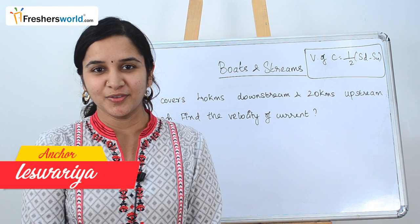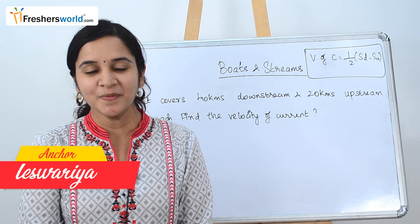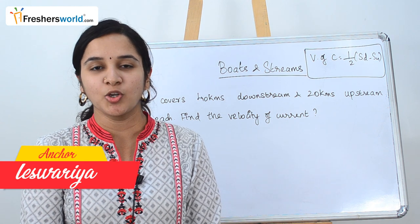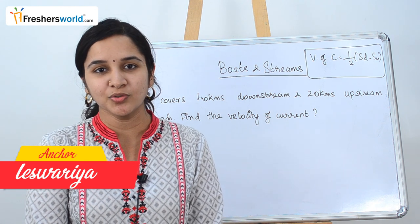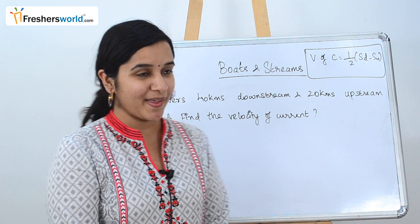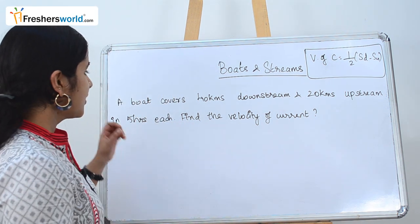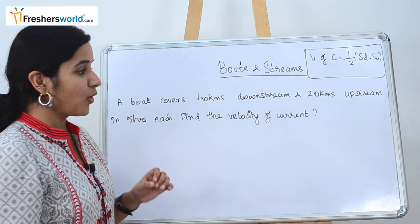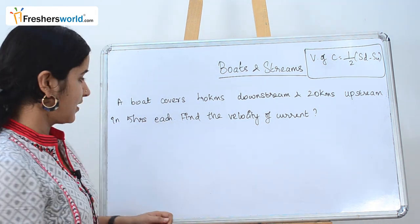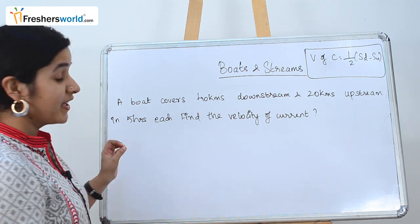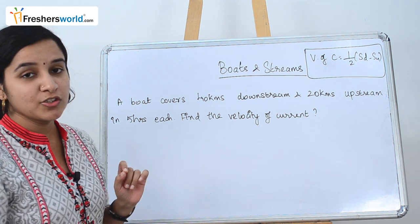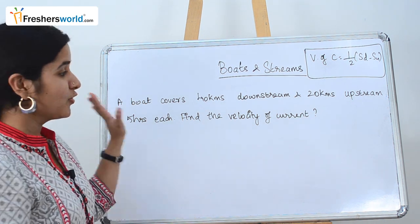Hi friends, this is Ayushwarya from freshersworld.com, welcome to our YouTube channel on jobs and careers. The topic we are going to look at today is boats and streams. The first question is: a boat covers 40 kilometers downstream and 20 kilometers upstream in five hours each — find the velocity of the current.